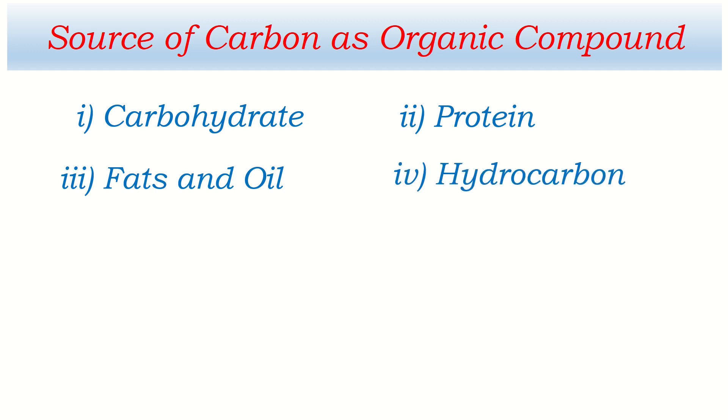Beside this, hydrocarbons which can be extracted from the earth crust is one of the major sources of carbon. In the same way, urea is also the source of carbon and vitamins also contain carbon. That's why these are the organic compounds which can be considered as source of carbon.